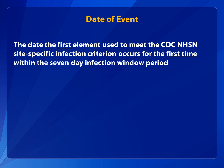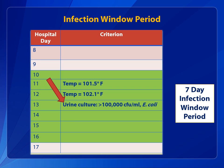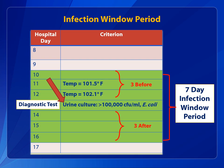Date of event is the date the first element used to meet the NHSN site-specific infection criterion occurs for the first time within the seven-day infection window period. Let's look at an example that illustrates the infection window period and date of event. E. coli is found in a urine culture collected on hospital day 13. The colony count is greater than 100,000 colony-forming units, or CFUs, per milliliter. The urine culture is a diagnostic test which is included as part of the urinary tract site-specific criterion. This sets the seven-day window period, which includes the diagnostic test date and three days before and three days after. All other elements of the infection criterion must occur during the window period for the site-specific infection criterion to be met.